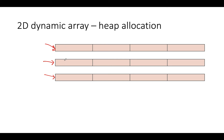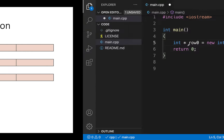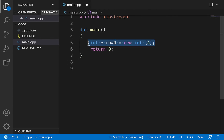In C++, each of these is just a single-dimensional array. So I create a pointer called row_zero using the new operator, then another pointer called row_one, and a third pointer called row_two. In code, row_zero equals new integer of four elements, because each row has four elements. This creates the first row.